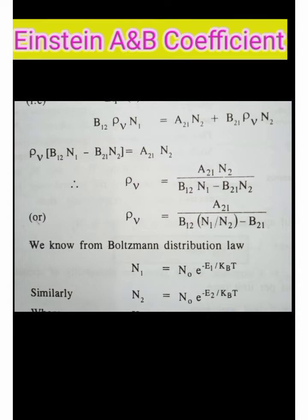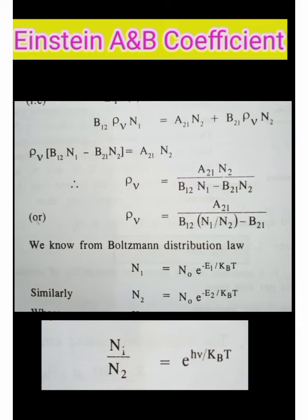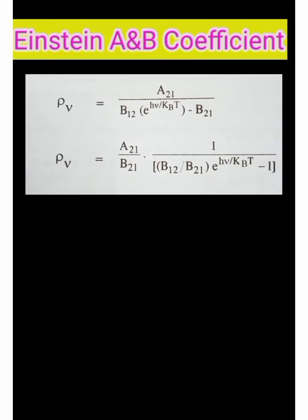By rearranging the above equation, we can write rho nu is equal to A21 divided by B12 N1 minus B21 N2. Therefore N1 by N2 is equal to E power H nu by KBT.